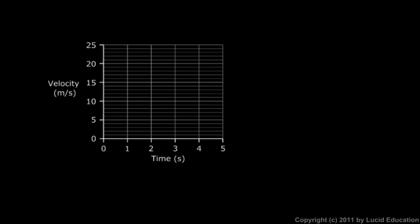We're just going to plot the numbers, and these are pretty easy. It started at 6 meters per second, so right at the beginning, at time 0, it had a speed of 6 meters per second — put a point on your graph right there at 6 meters per second. Its speed increased to 22 meters per second in 4 seconds, so after 4 seconds it was moving at 22 meters per second — put a point on your graph right there.